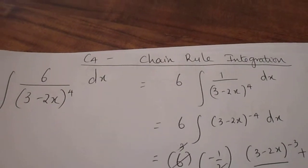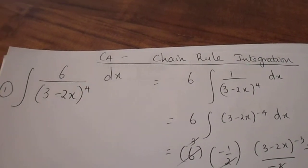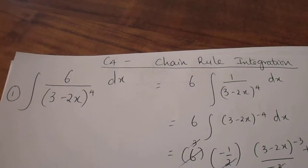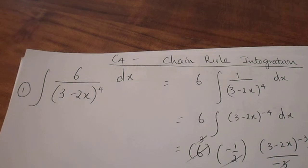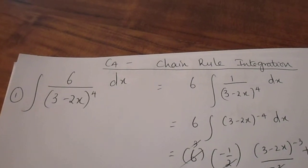Hi guys, so today we will be looking at some C4 chain rule integration questions. The first question requires you to integrate 6 over 3 minus 2x all to the power of 4 dx.